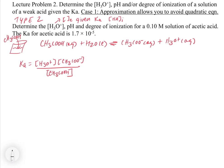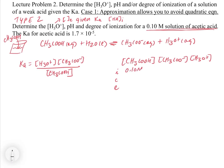The next thing to do is go to our ICE table with our standard entries. We're starting with a 0.10 molar solution of acetic acid, so we put the acetic acid in at that concentration and let it go to equilibrium. Initially we have none of the products. The change row is minus X, plus X, and plus X from stoichiometry. At equilibrium we get 0.10 minus X, X, and X.